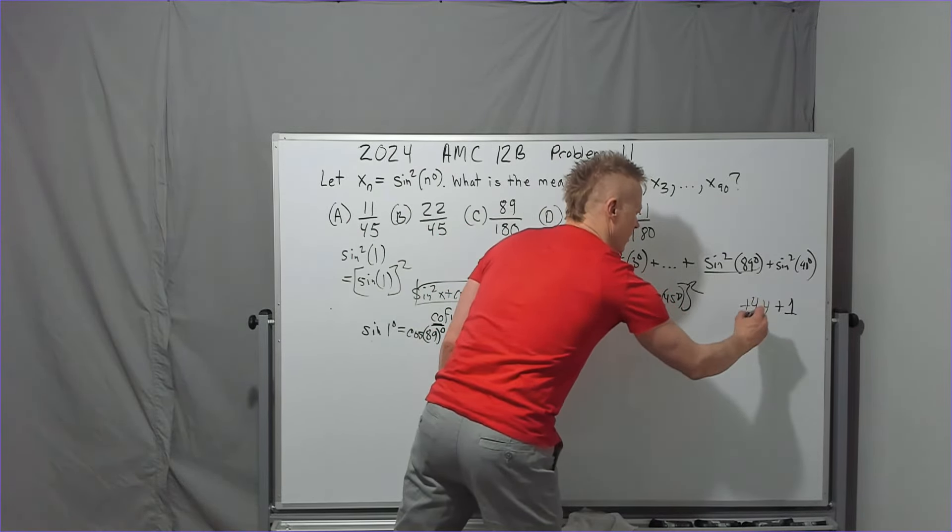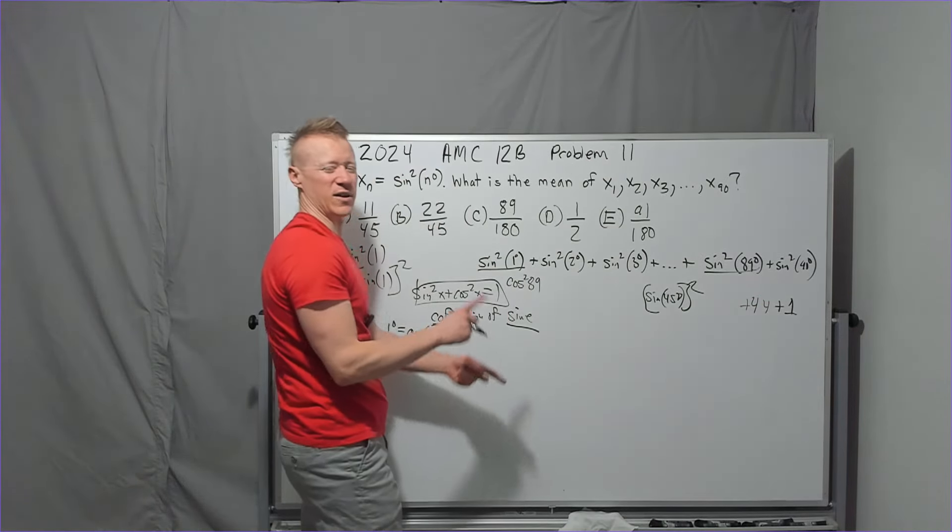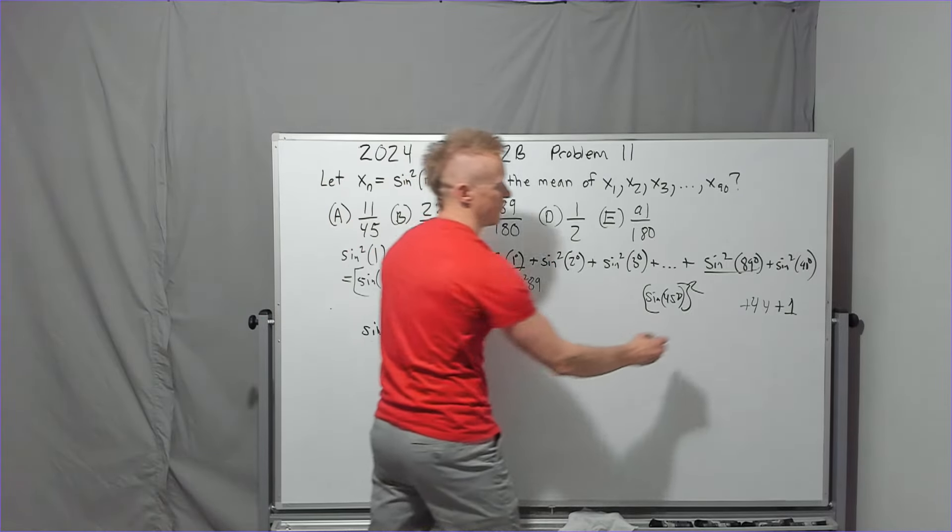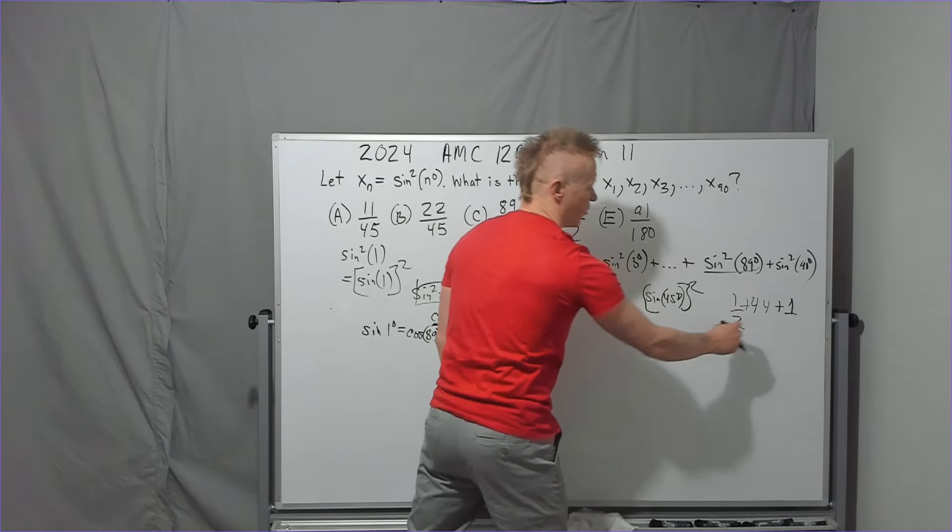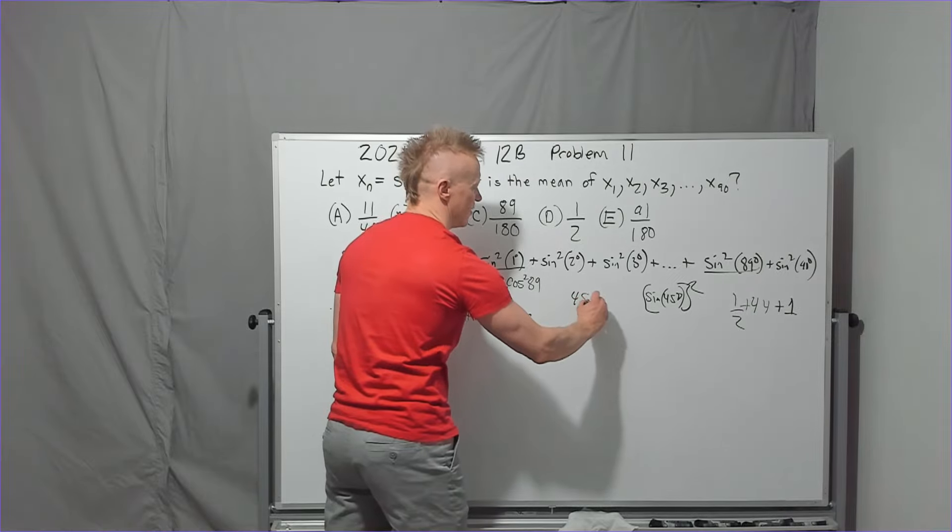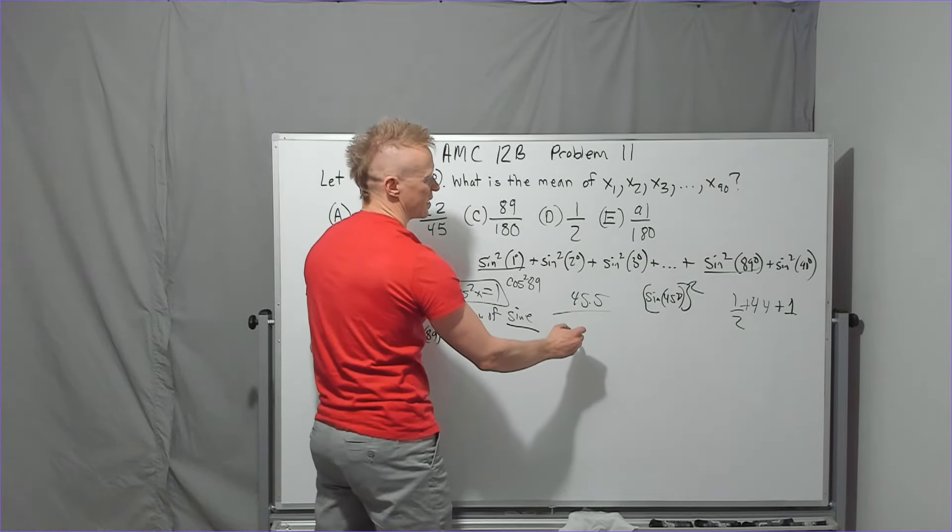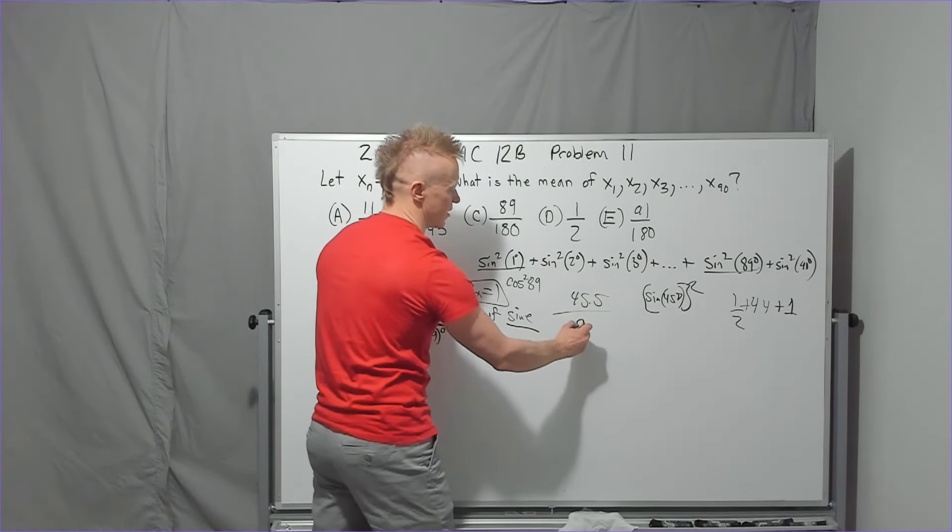So you're going to have 44 ones added there. What is the sine of 45? Root 2 over 2. Square it to get a half. Drop the half right here, 45.5. So now you have a sum that is a number, and it's going to be over how many values were there. There was 90.